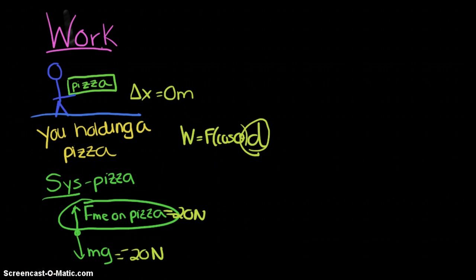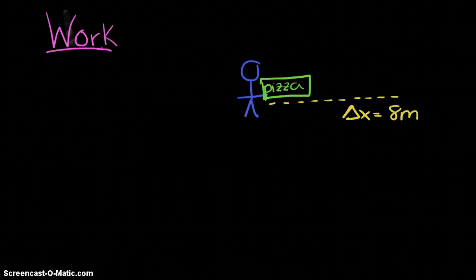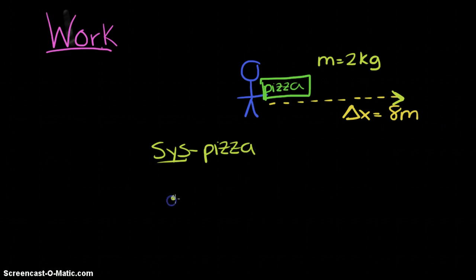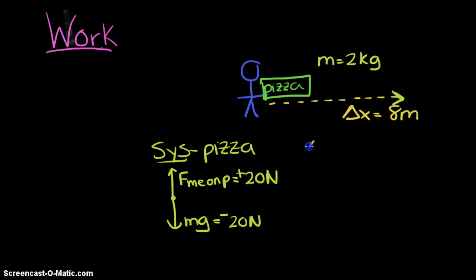Now imagine you carry that pizza down the hallway with a displacement of 8 meters to the right. The pizza's mass is 2 kg. The force of you on the pizza is 20 Newtons upward. Drawing the force vector and displacement vector tail to tail, the angle between them is 90 degrees.